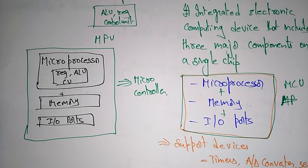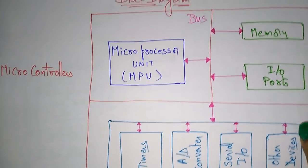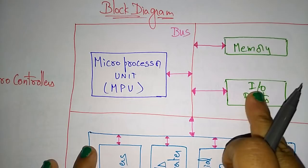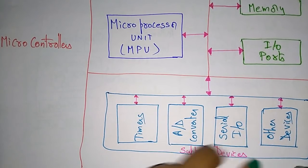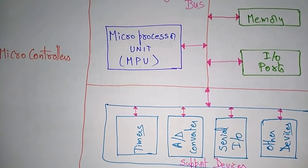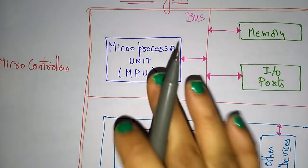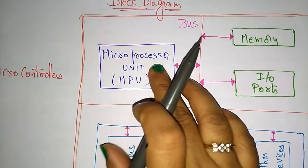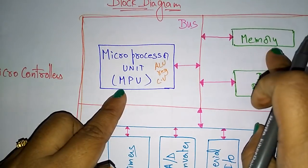Now let us see the block diagram of this microcontroller and microprocessor so we will understand clearly. The microcontroller mainly consists of three components: microprocessor, memory, and input/output ports. Along with the chip, some supporting devices are present — timers, analog-to-digital converters, serial input/output, and some other devices — all integrated in a single chip inside the computer. This microprocessor consists of ALU, registers, and control unit.